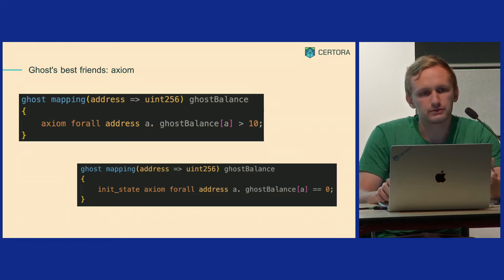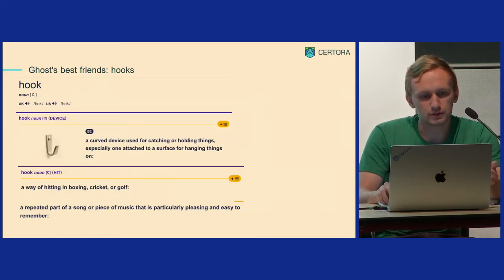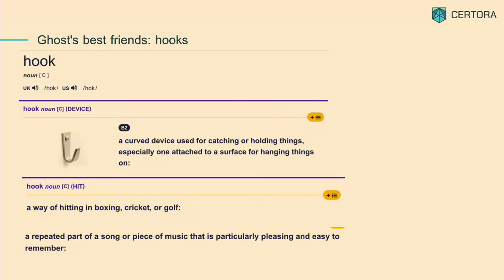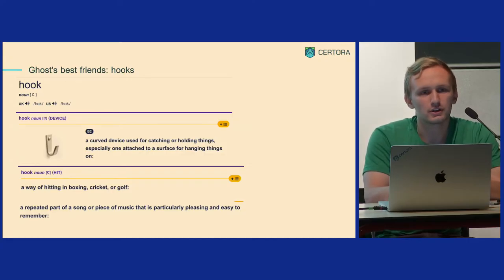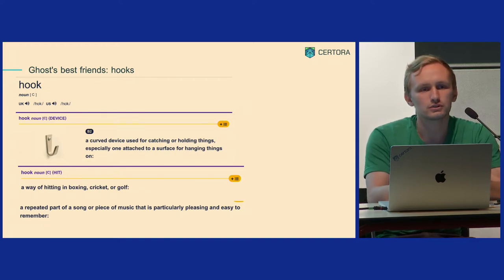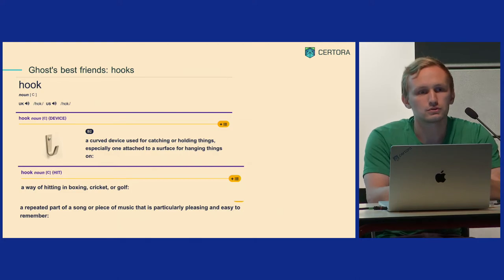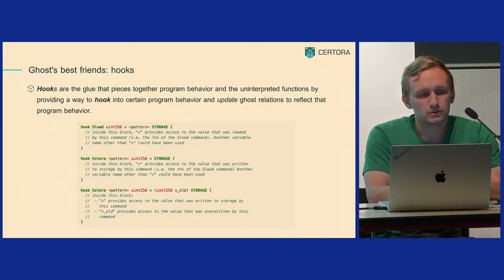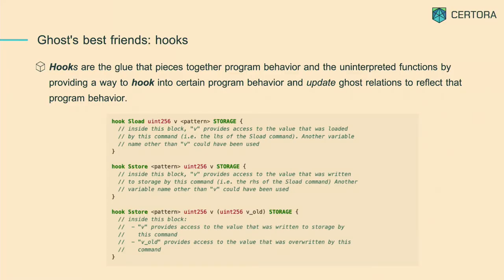But still, it looks not expressive enough — it's really hard to understand what we can do with it. Then we need a second feature called hooks. Looking at a real-life definition: 'a curved device used for catching and holding things.' In our case, the hook is used to catch a value from a Solidity variable. In Certora, we say that the hook is the glue that pieces together program behavior and uninterpreted functions — or ghosts — by providing a way to hook into certain program behavior and update ghost relations to reflect that program behavior.